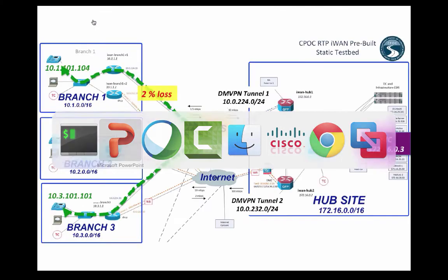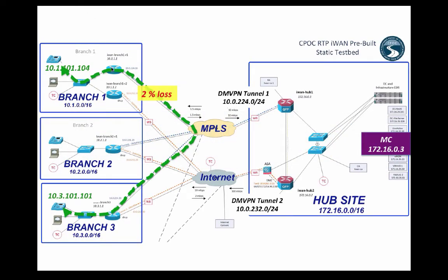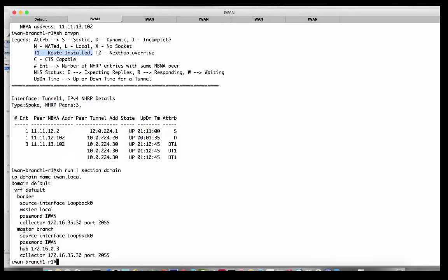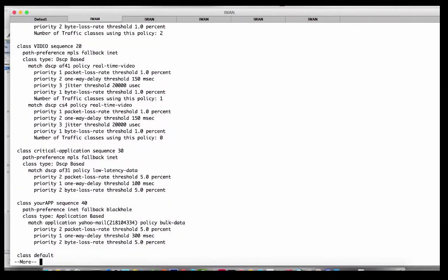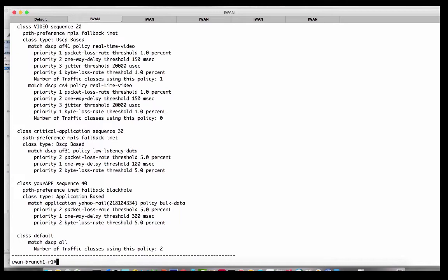Every site will have its structure. Branch one has branch one router one with a DMVPN tunnel over MPLS, and branch one router two. Since there are two routers at that branch, both at the ends of DMVPN tunnels, branch one has two borders. Branch one is also a site, so it has a site master — we've made that branch one router one. And it is this branch master that talks back to the domain master controller at 172.16.0.3. If we run show domain default master policy on branch one router one, we see the same policies as on the domain master.